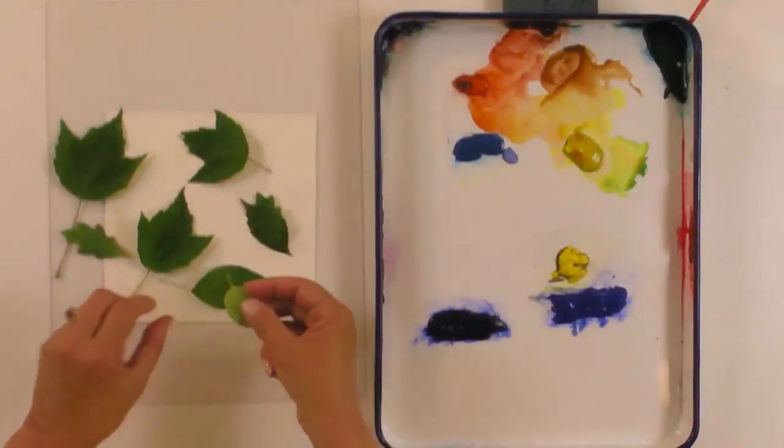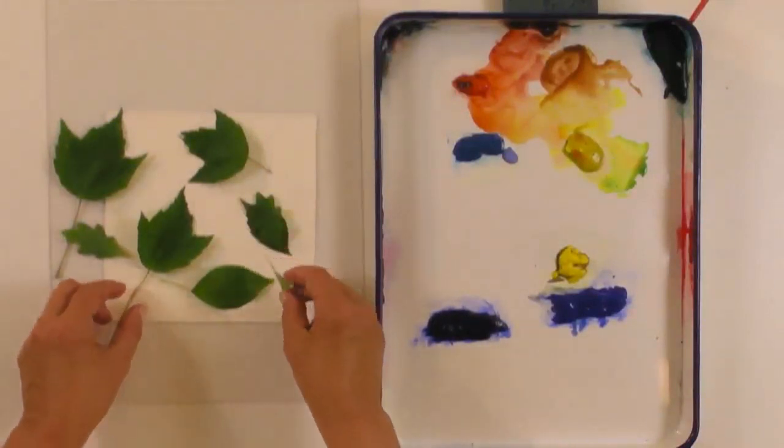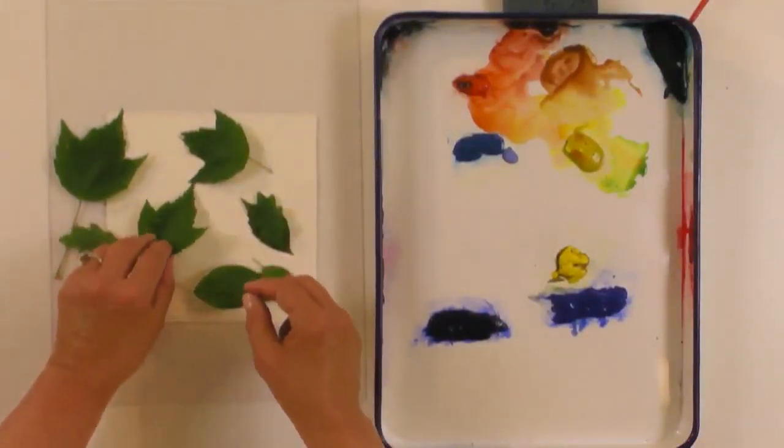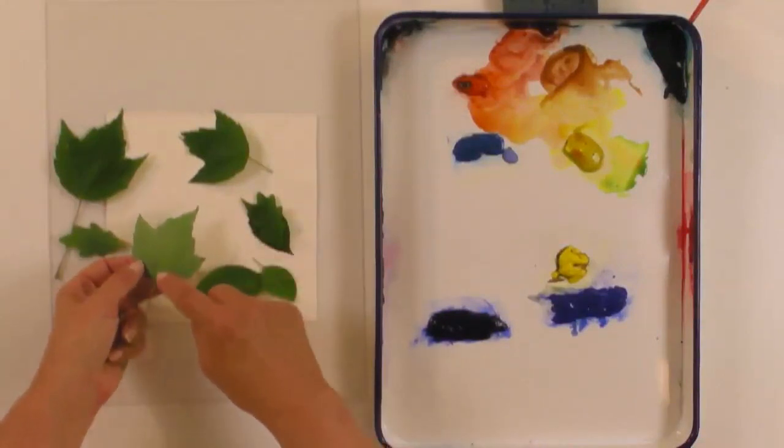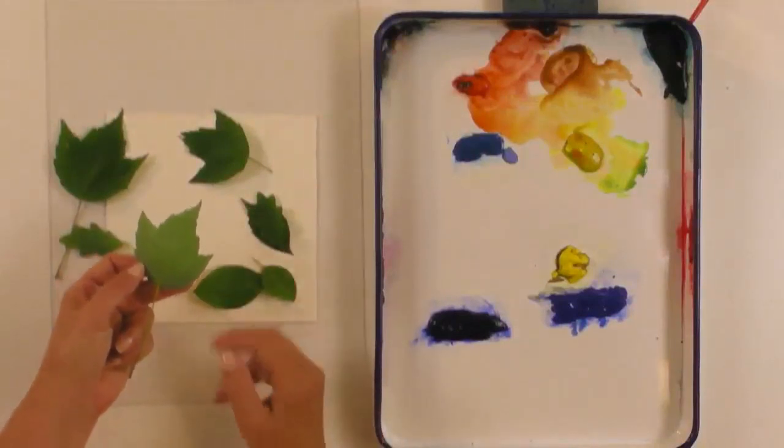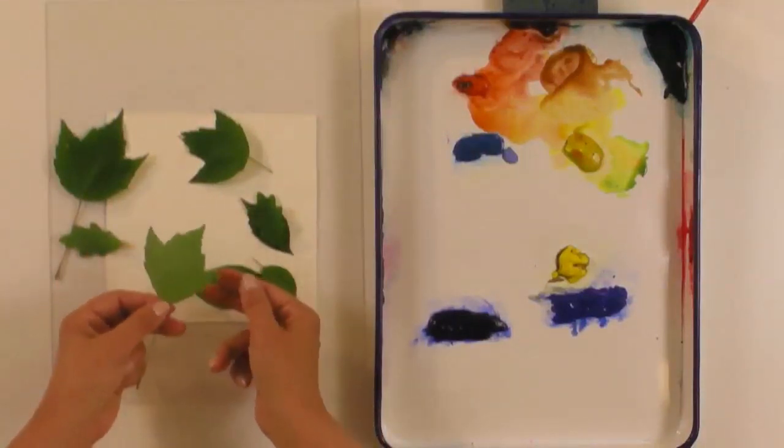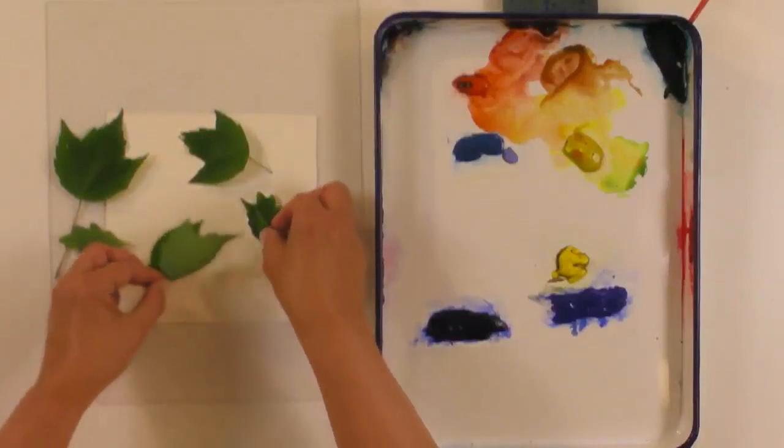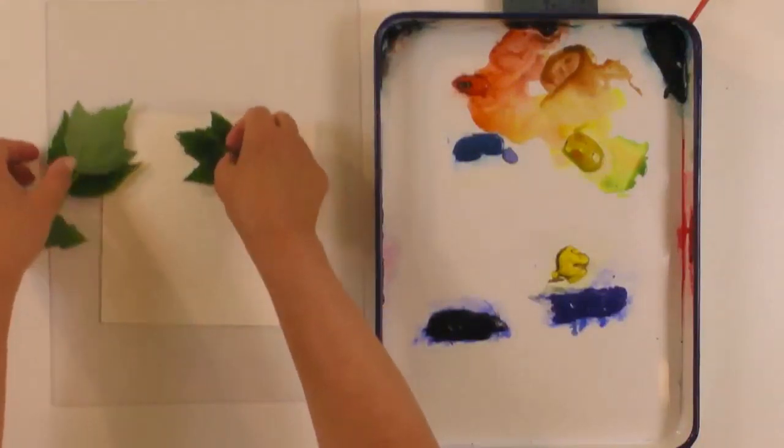What I look for when I pick the leaves is the veining on the back side. You want distinct veining on the back side. Some leaves are almost smooth on the back side; those won't work so well for this technique. I'm going to take maybe two or three of these and use them for my painting.